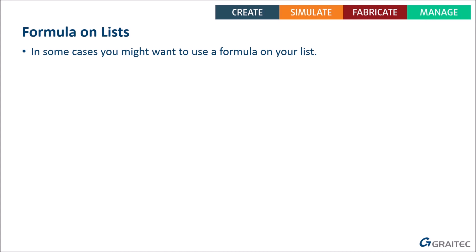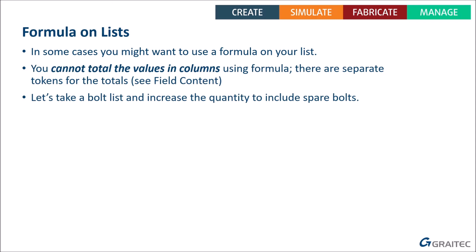That covers the known issues. One more tip: using formulas on your lists. Why would you want a formula? You cannot use formulas to total a column the way you would in Excel — there are no SUM functions. For totals you use special properties like Global Exact Weight or Assembly Exact Weight. But formulas can do other useful things, such as adding a percentage of spares.